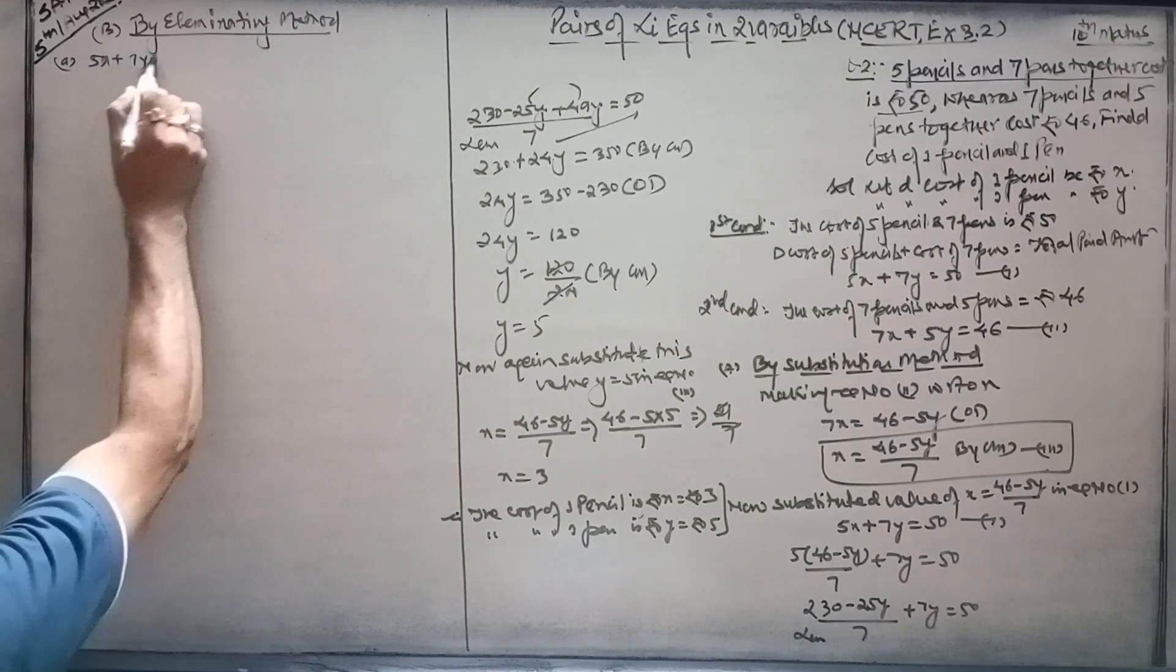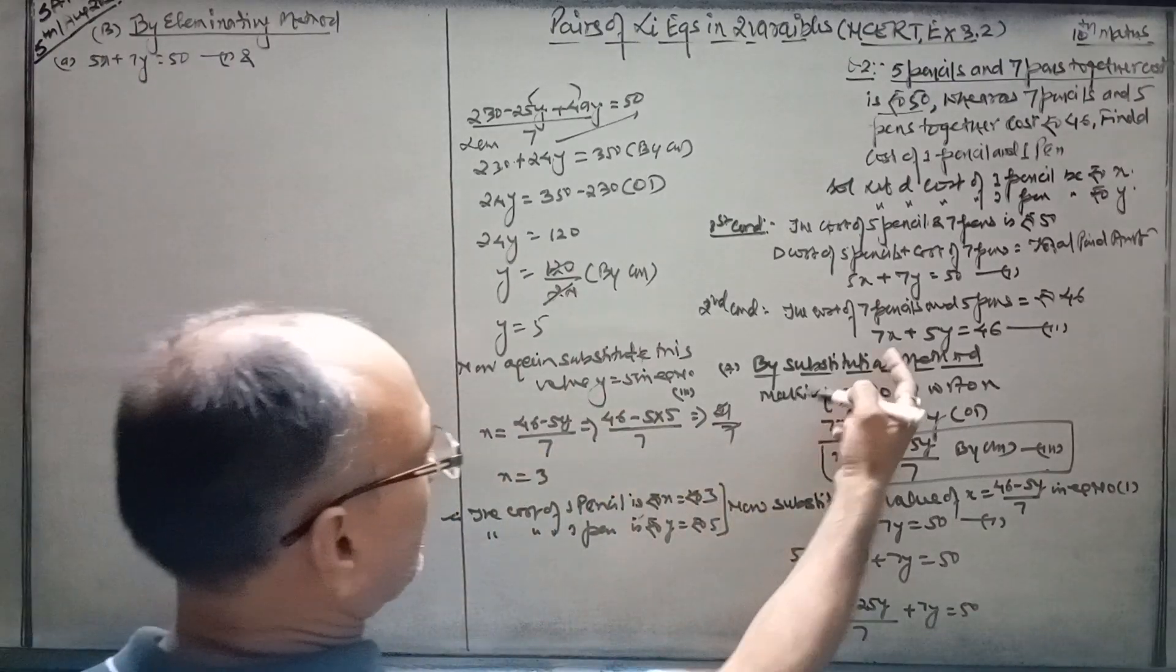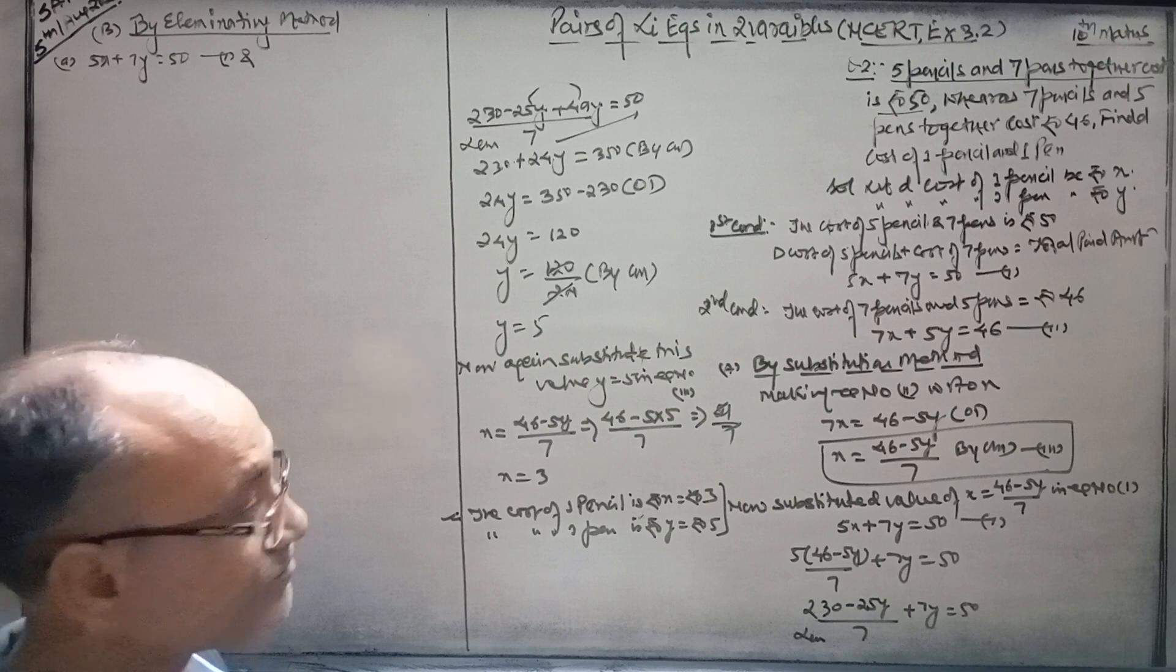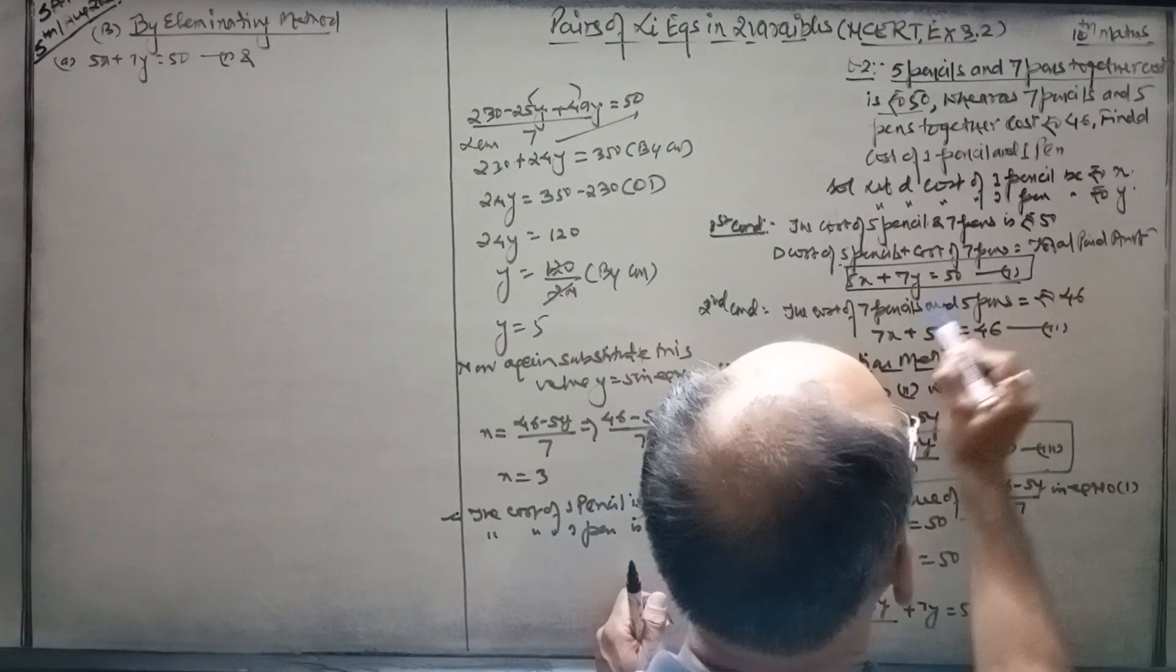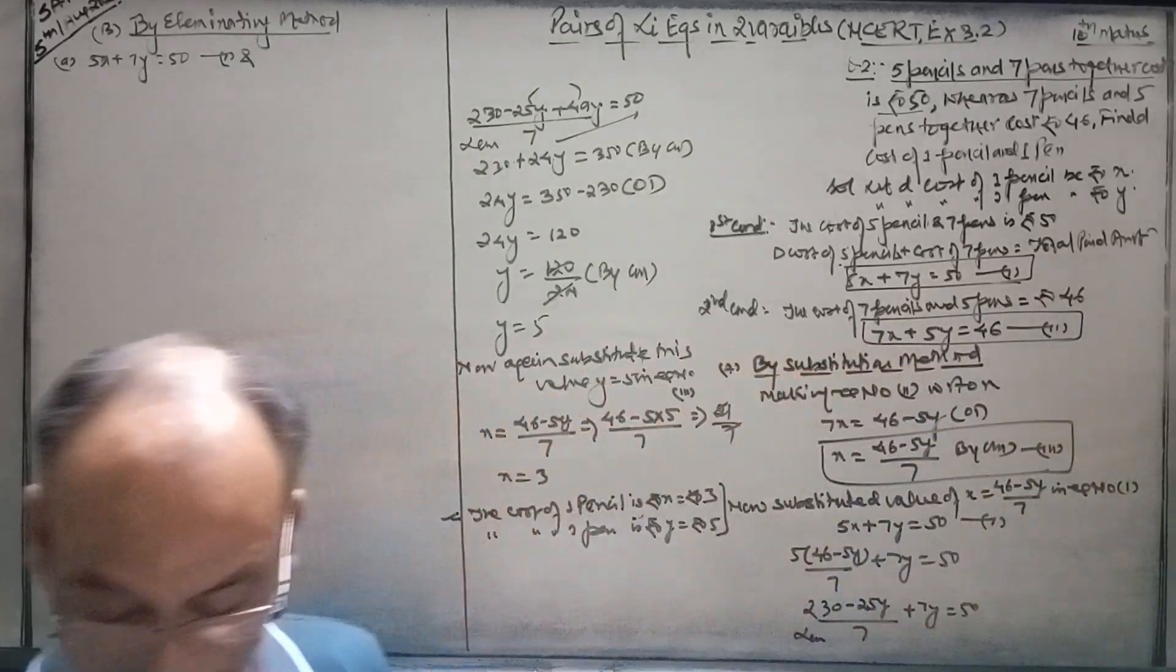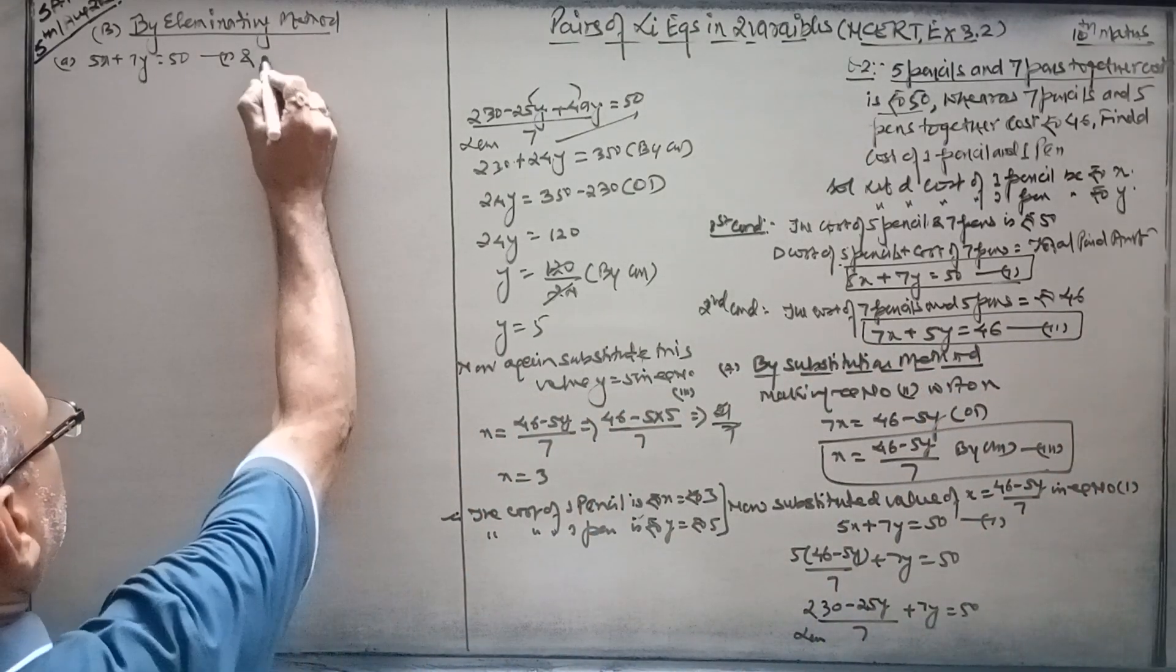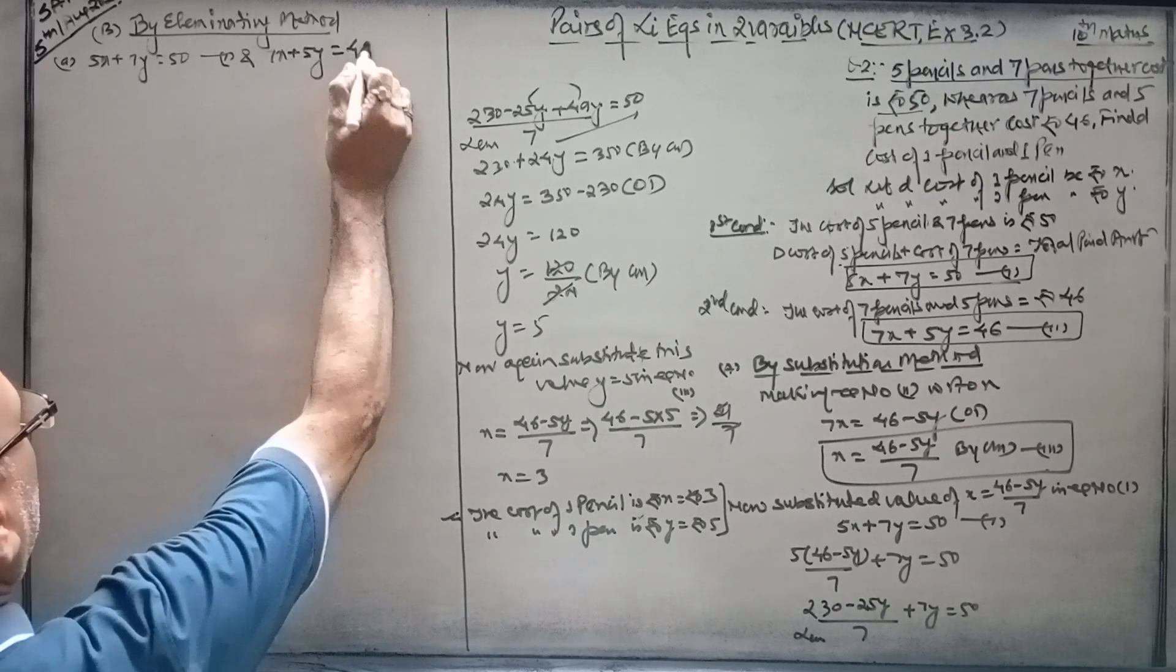5x plus 7y is equal to 15, the first equation. And 7x plus 5y is equal to 46.